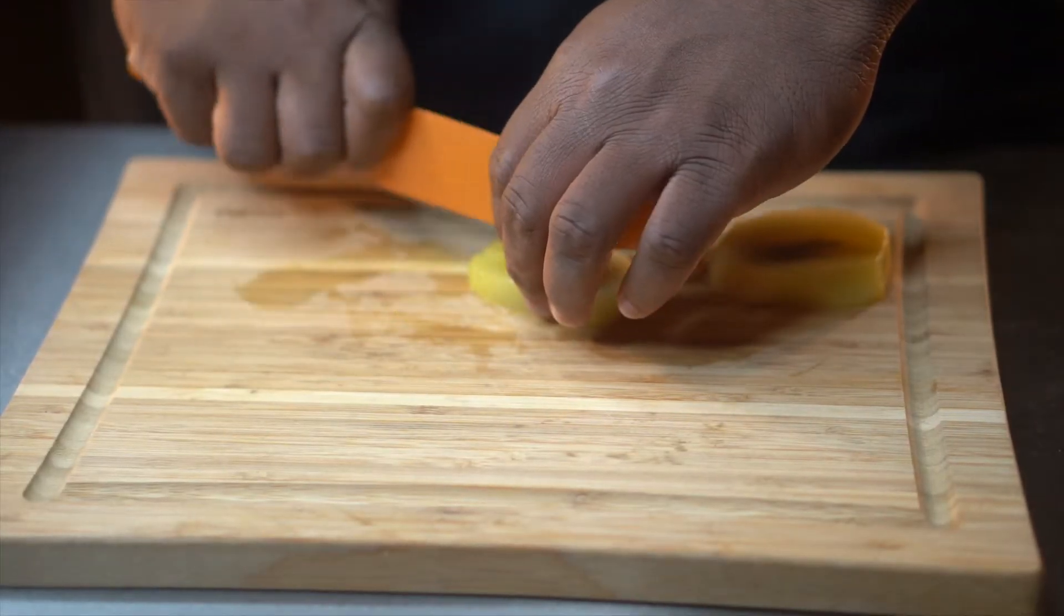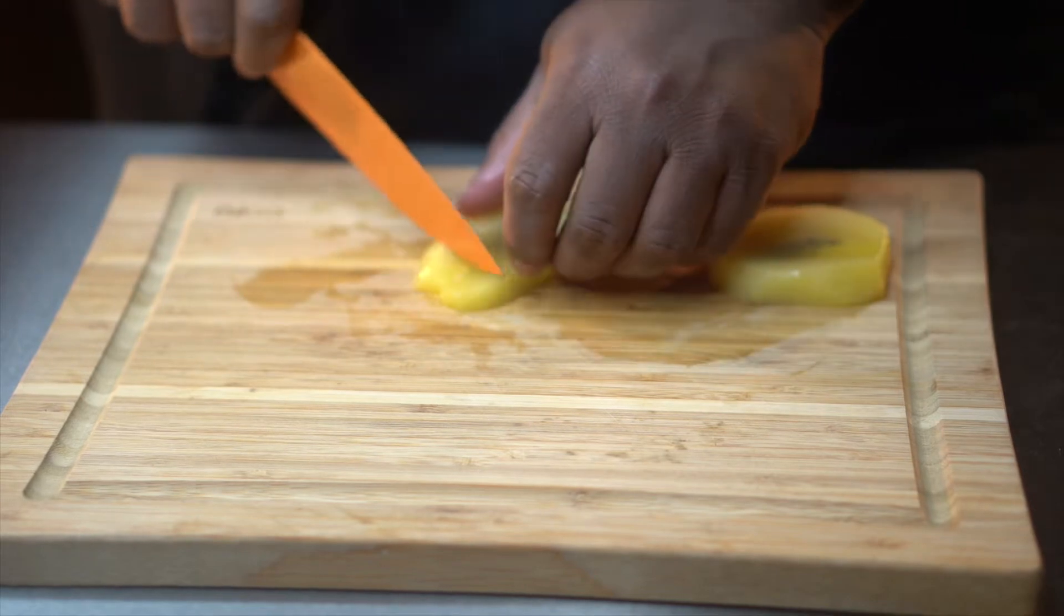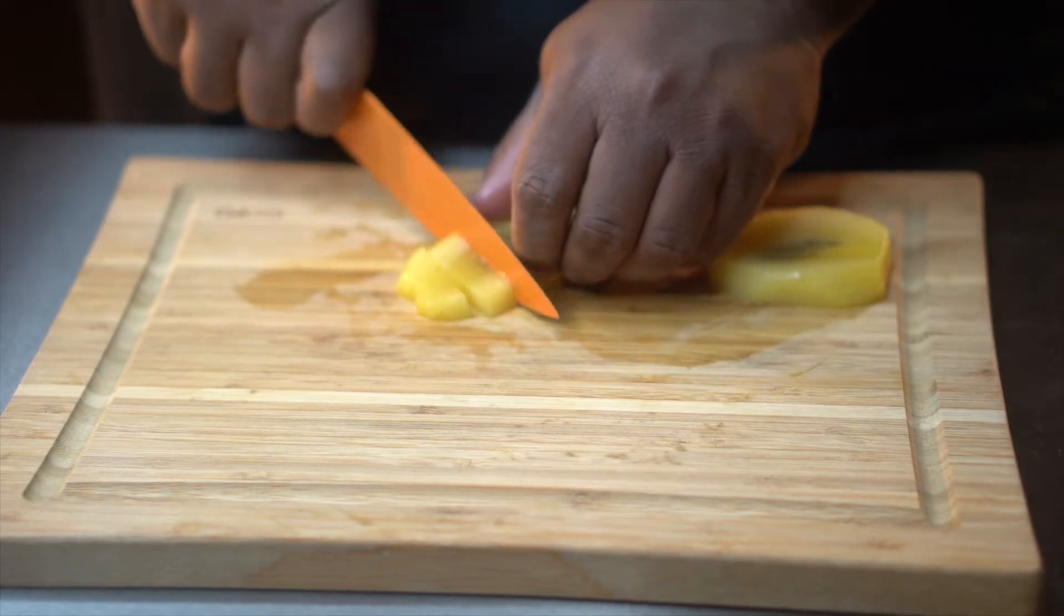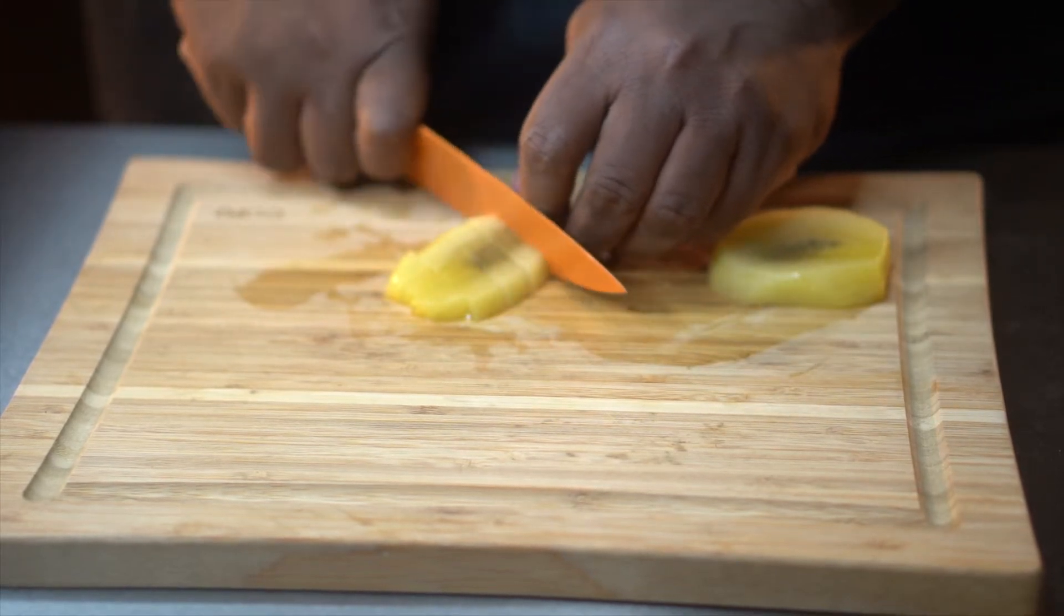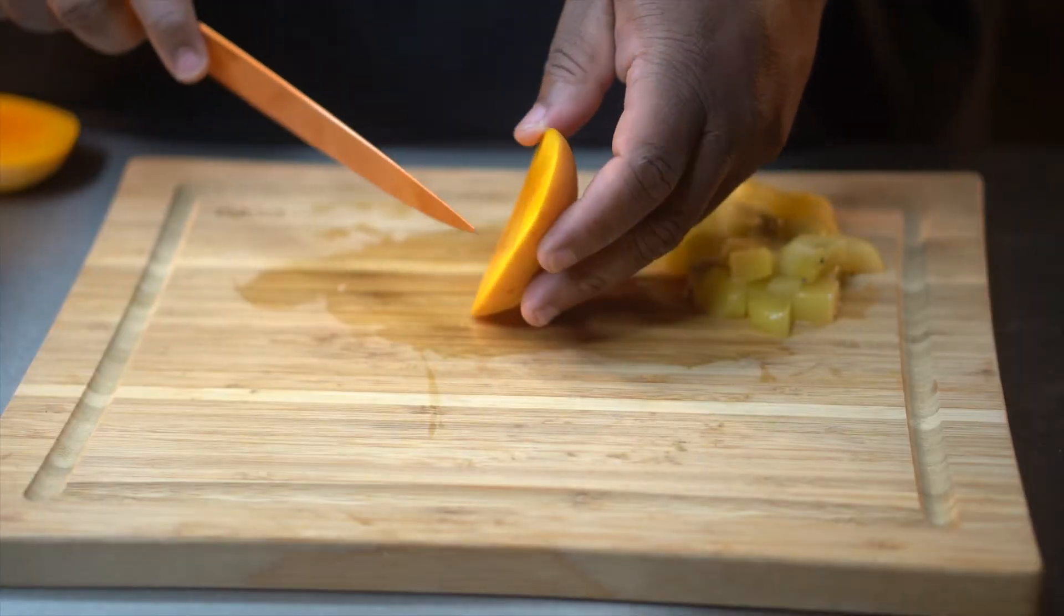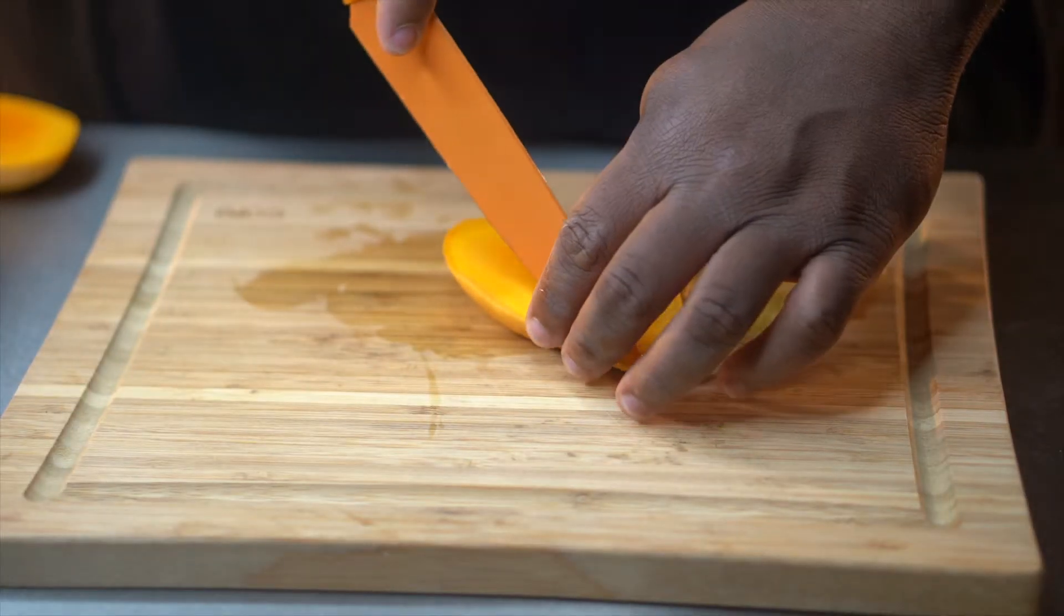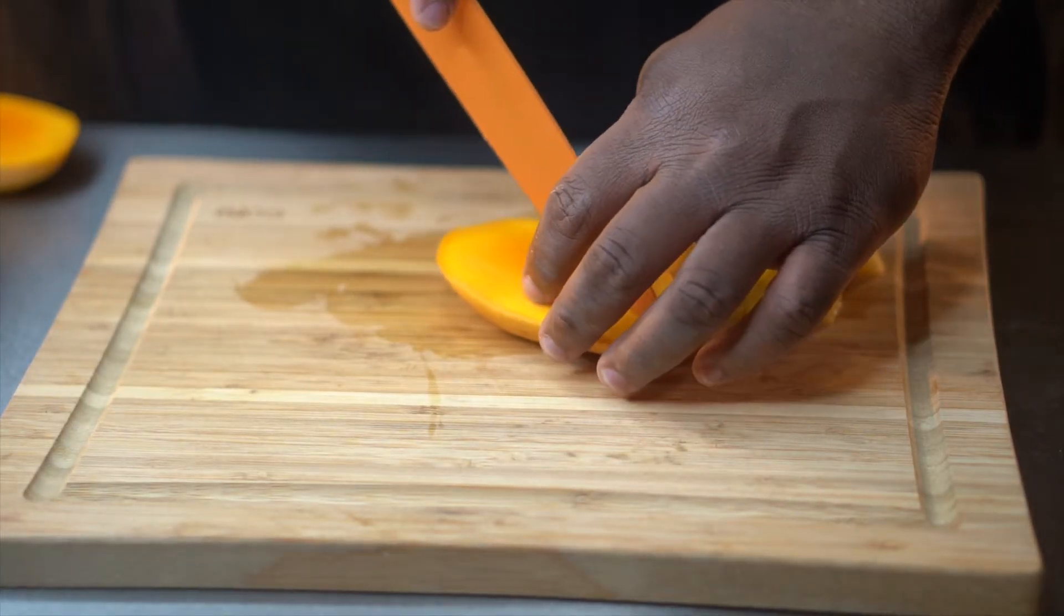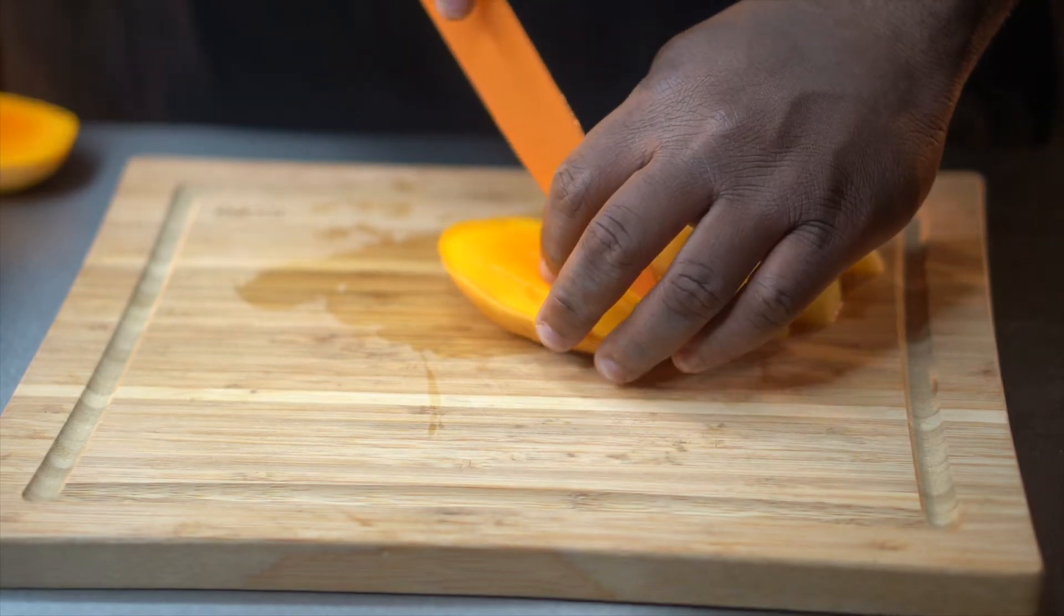But you can pretty much cut them any way you want. Remember, we're going to do this kind of like a sangria style and we're using a glass, so you just want to make the pieces look uniform. So with the mango, I'm slicing it vertical, and then from that vertical slice, I'm going to turn it and slice it horizontal.